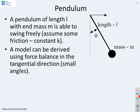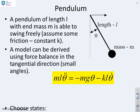What about a pendulum? So a pendulum of length l with end mass m is able to swing freely. And we're going to assume some friction constant, k. Now a model can be derived using force balance in the tangential direction, assuming small angles. And I'm not going to go through the derivation of this. I'm just going to give you the equation. So there's a typical equation: ml theta double dot equals minus mg theta minus kl theta dot. And the challenge here is to say, can I put this model into state space form?